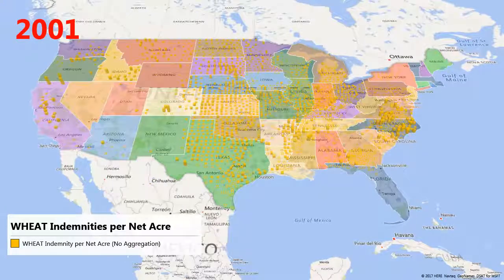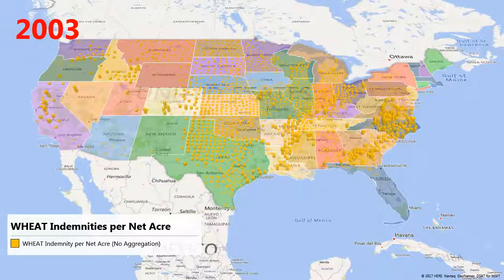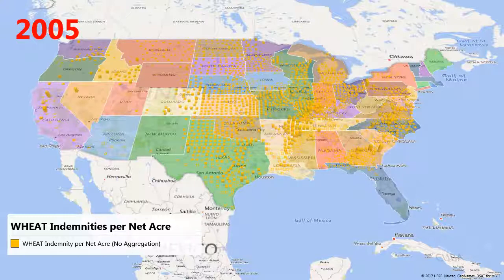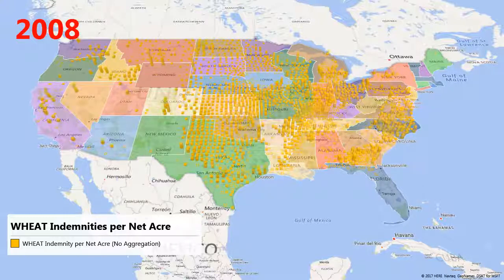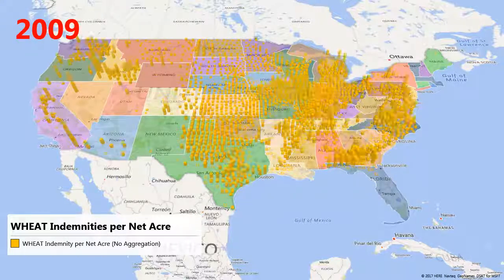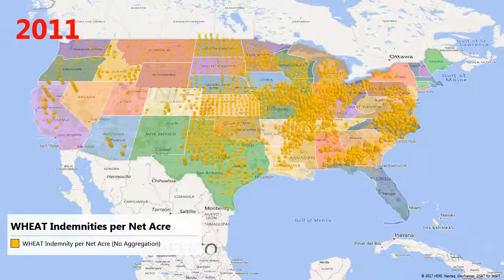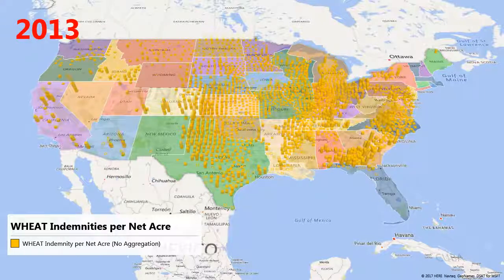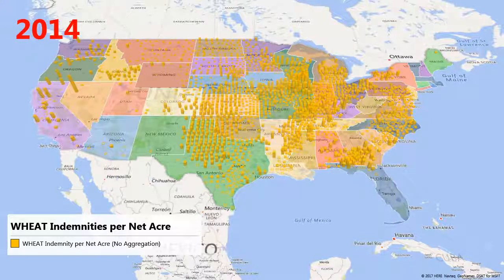This scene shows national wheat indemnities received by each county from 2001 to 2015. During the 15-year time period, the indemnities received were the lowest in 2005 at about 271 million, and highest in 2013 at about 2.1 billion.